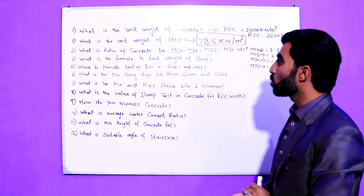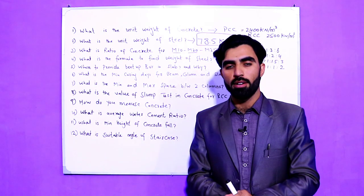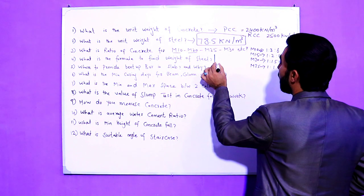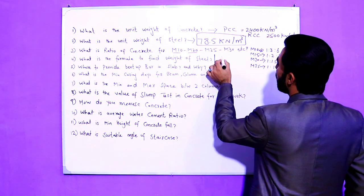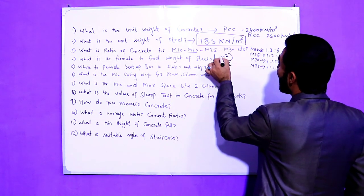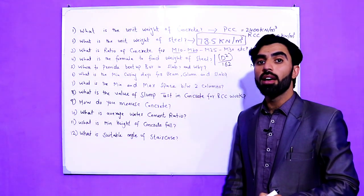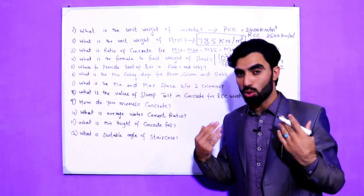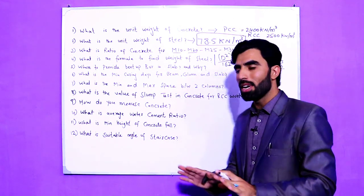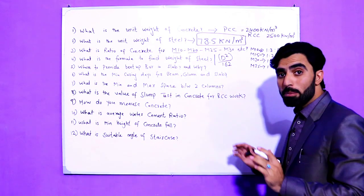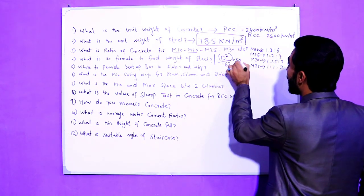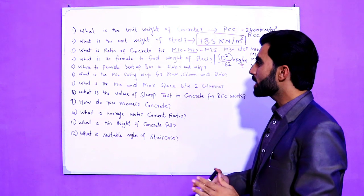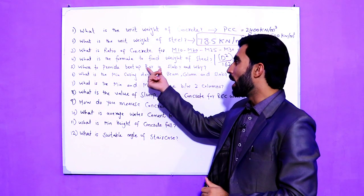The fourth question is: what is the formula to find the weight of a steel bar in kg per meter? The formula is D squared divided by 162, where D is the diameter in millimeters — for example 10 mm, 12 mm, 18 mm, 20 mm, 25 mm, or 30 mm. This gives you the answer in kg per meter.